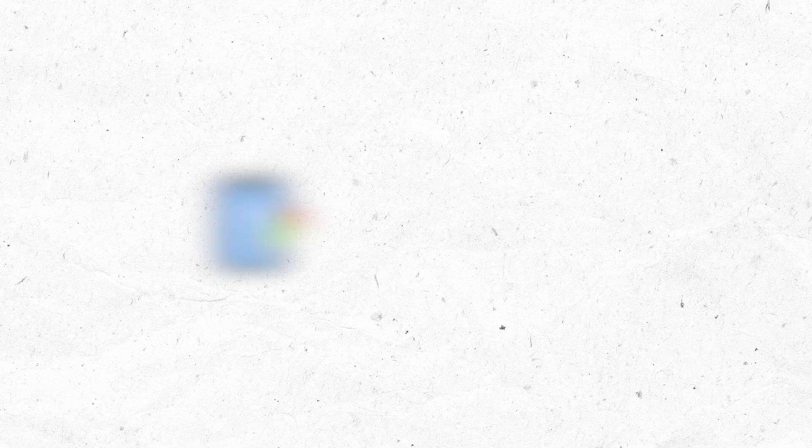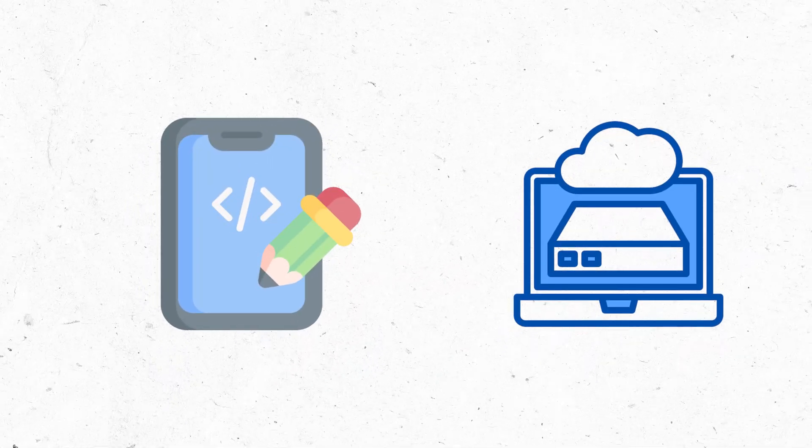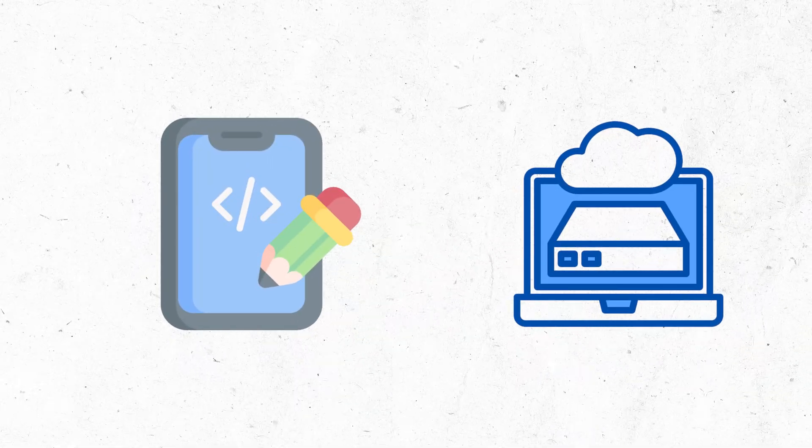Firstly, let's understand what a full-stack developer is. A full-stack developer is a person who can manage both client-side and server-side applications. This means it is divided into two parts: front-end development and back-end development. The role of a front-end developer is to manage everything the user interacts with, whether from the browser or from the application — they are responsible for how the user interacts with the system.